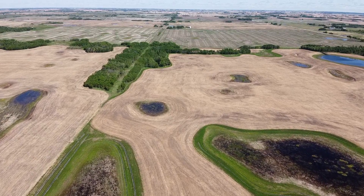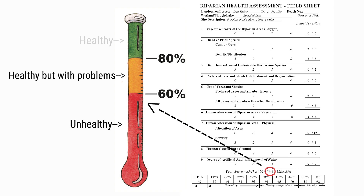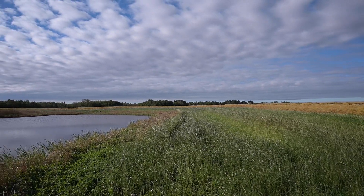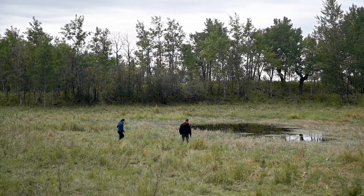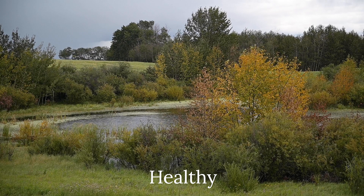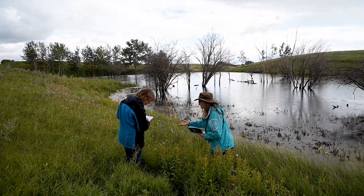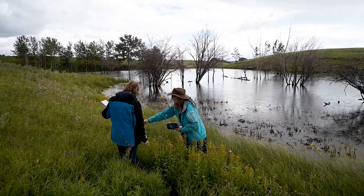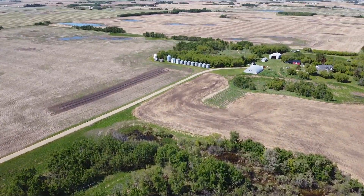In a riparian health assessment, some indicators are weighted more importantly than others, and they all get added together to come up with an overall health rating. When all the indicators are rated highly, the riparian area is healthy. Like the intricacies of a watch, a riparian area needs all of its pieces to work properly. If not all the pieces are working perfectly, the ability to correctly perform its functions is impaired and the site may be unhealthy. Conducting a riparian health assessment is a great way to identify issues and showcase successes. This tool can help inform what management changes may be needed and it allows you to monitor the impact of those changes. Now that you've tuned your eyes to what to look for, how healthy is your riparian area? Stay tuned for a riparian health field day in your area or contact us if you'd like more information.